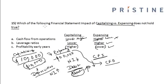We were asked which of the following financial statement impacts of capitalization versus expensing does not hold true. This option does not hold true, hence option A is the incorrect statement regarding the impact of capitalization versus expensing.